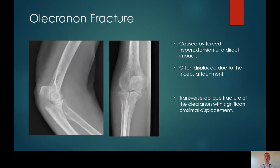Olecranon fractures are generally not so subtle and are caused by forced hyperextension or a direct impact. They can be very displaced due to the attachment of the triceps tendon. This is an example of a transverse oblique fracture of the olecranon, and again, you can't appreciate a posterior fat pad, although there is clearly an elbow fracture present.